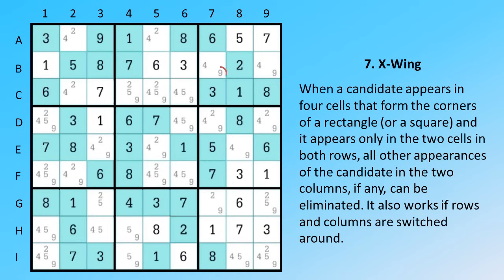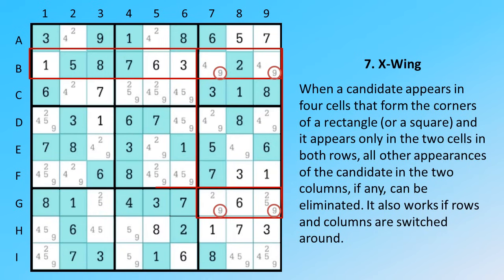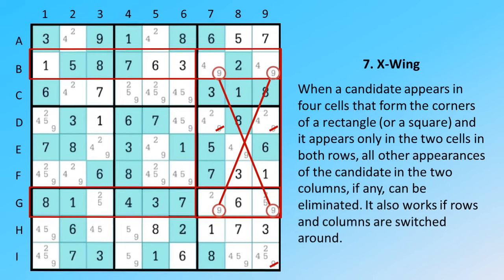When a candidate appears in four cells that form the corners of a rectangle or a square, and it appears only in the two cells in both rows, all other appearances of the candidate in the two columns can be eliminated. It also works if rows and columns are switched around.